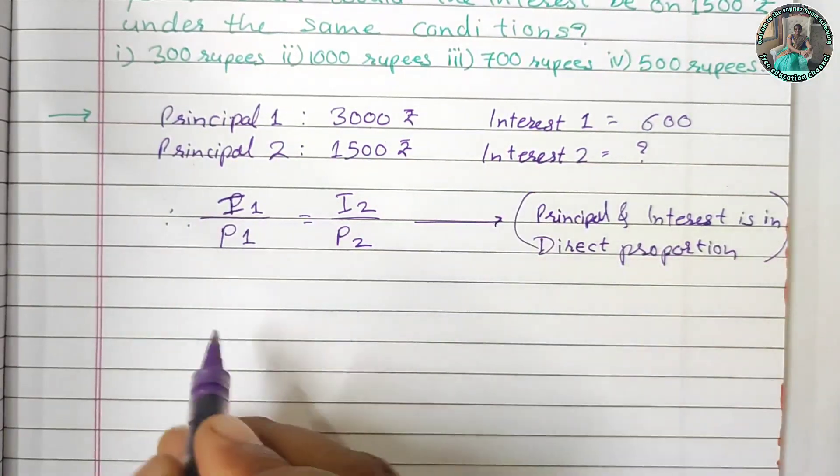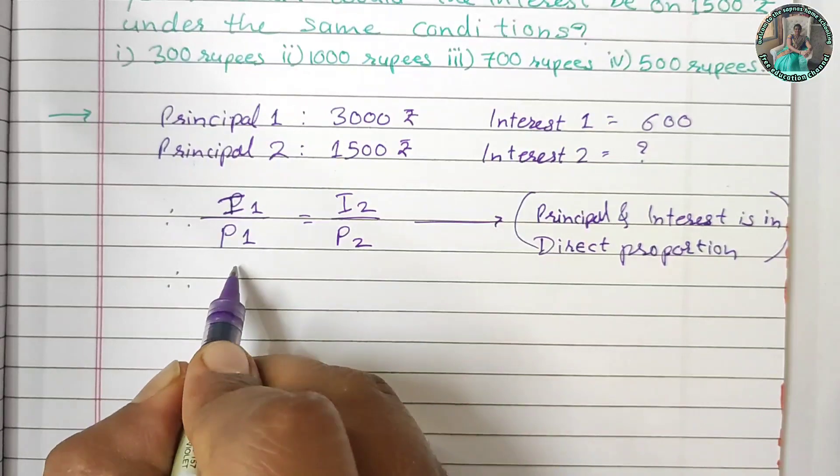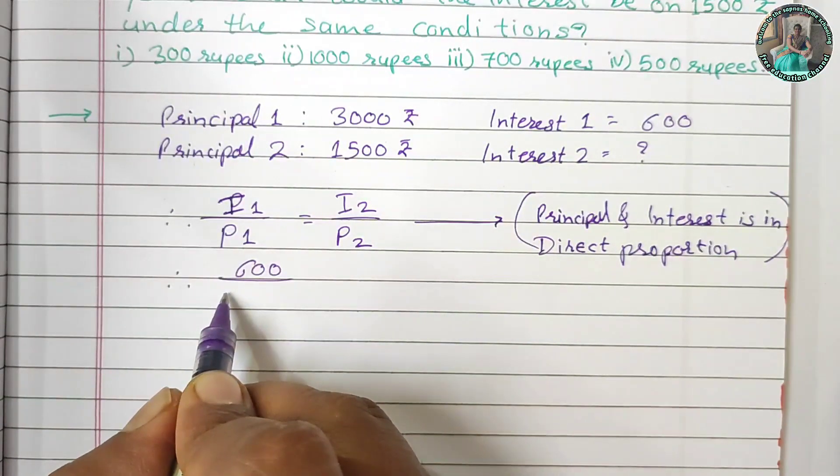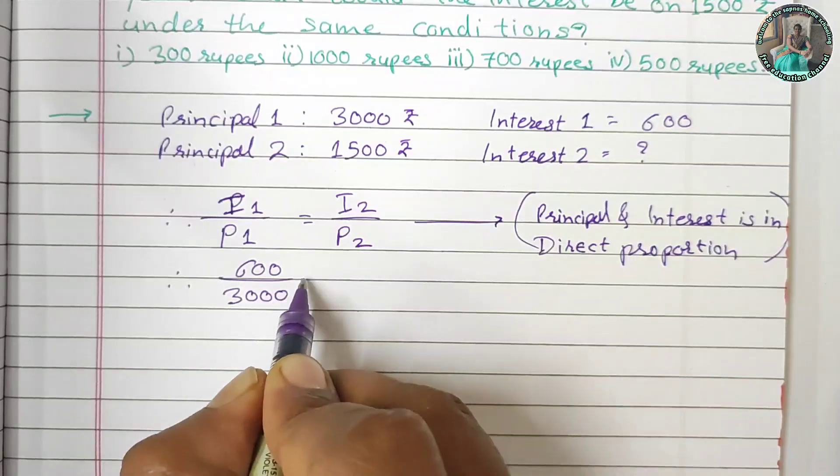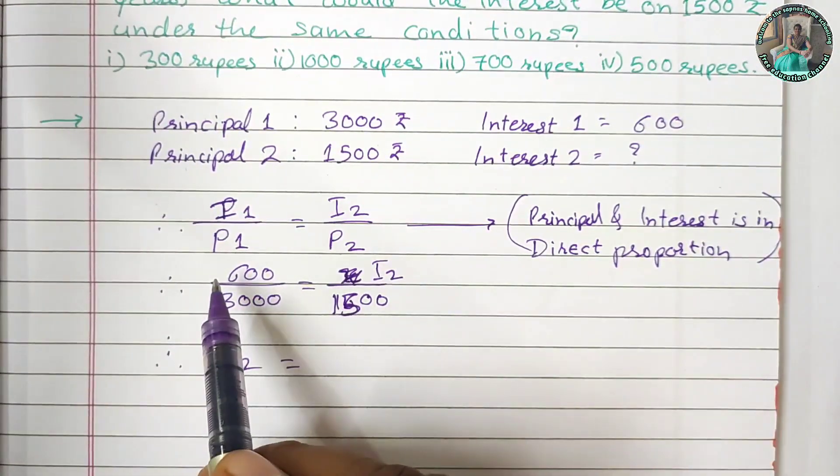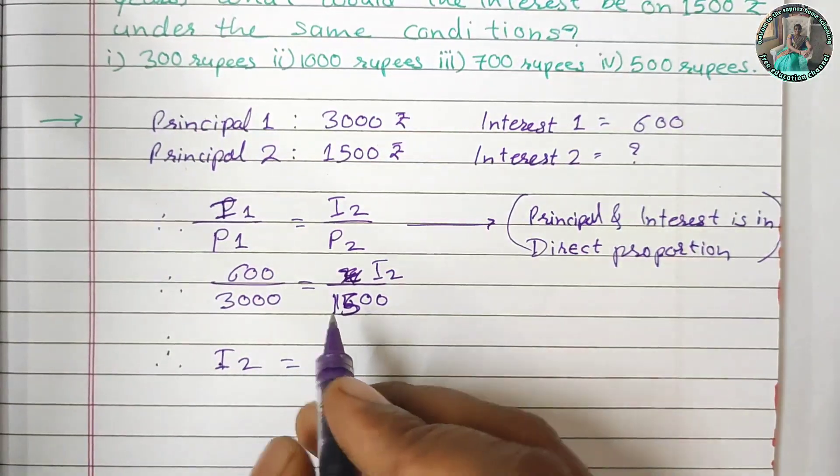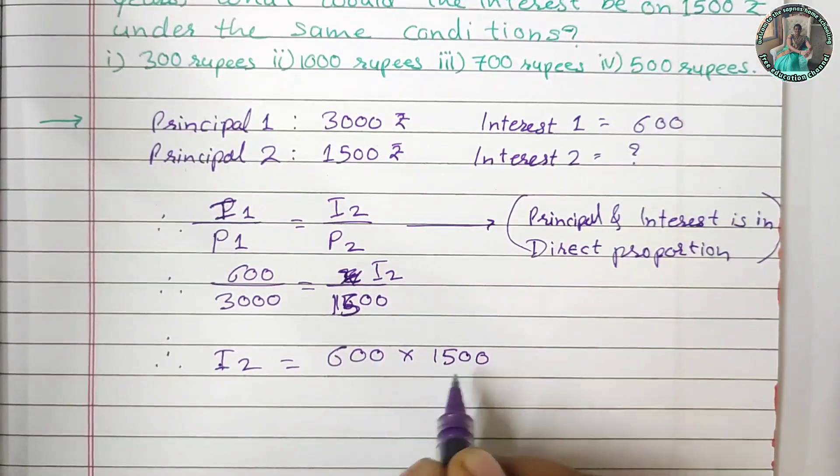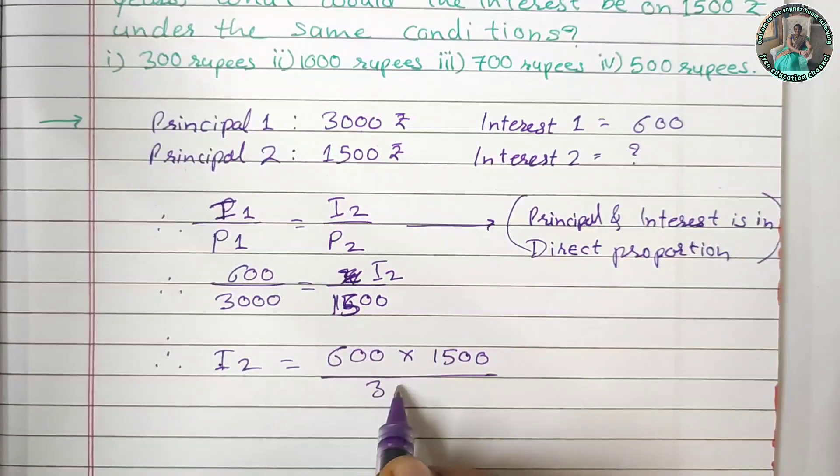In the second step, Interest 1 is 600, Principal 1 is 3,000, Interest 2 is unknown, Principal 2 is 1,500. Using cross multiplication, Interest 2 equals 600 multiplied by 1,500 divided by 3,000.